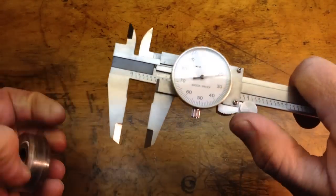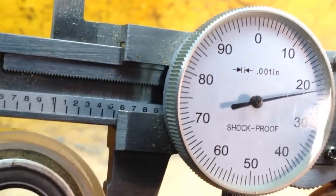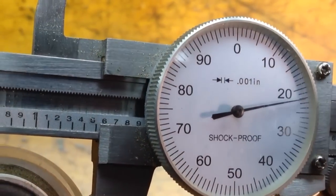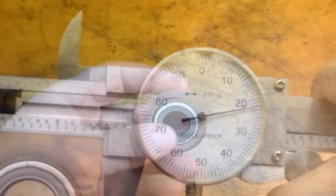And basically, you slide that open, and we're going to measure the outside of the bearing, and we start off reading the linear scale. So we're at 1.5, and then we go to the dial, and it's at 22, so we're at 1.522.